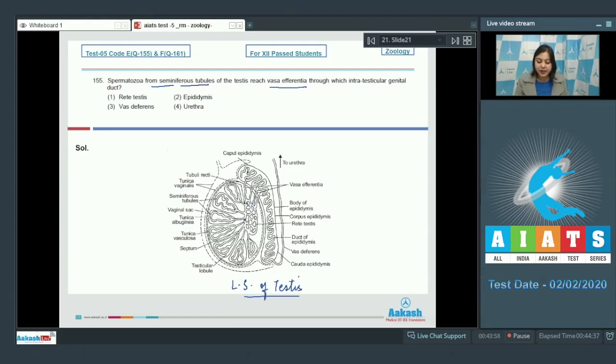Let us see here in the diagram. This is a network of rete testis from where the vasa efferentia take the sperms to the epididymis. This here is the epididymis which is divided into three parts: the caput, the corpus and the cauda epididymis. So the network of tubules which transfers the sperms from tubuli recti to vasa efferentia are rete testis. So the correct answer becomes option number 1.